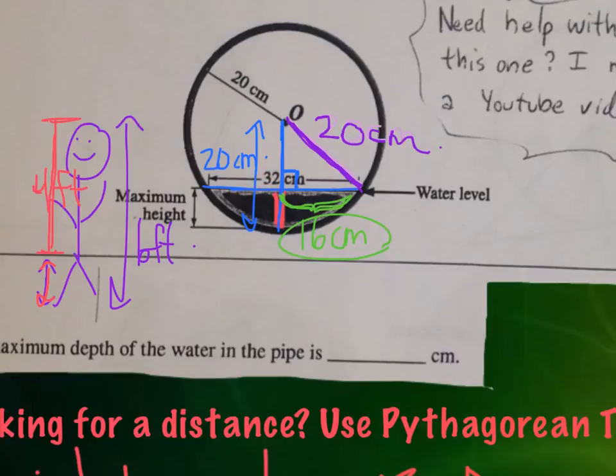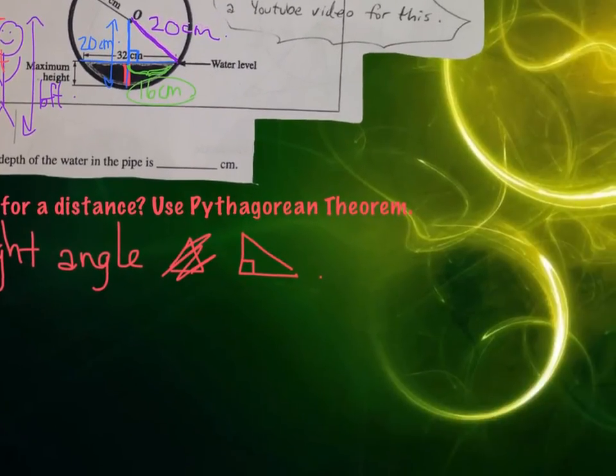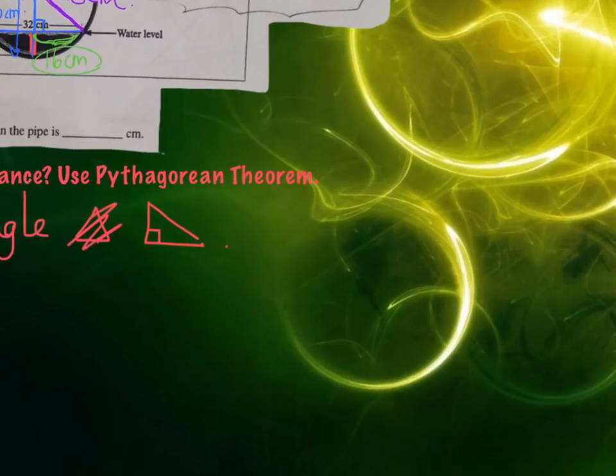Again, if we're able to figure out the distance here, we would just subtract that from 20 to get the height of the water there. All right, let's do this. Let me just move over here. I'm just going to draw the triangle over here. Okay, so let's see if I remember this. This is what our triangle looks like. This distance here is 20. This was 16. And we're trying to find out this distance here.